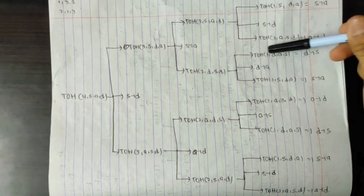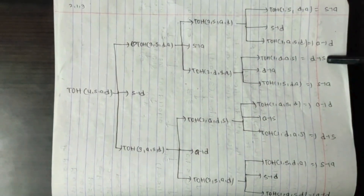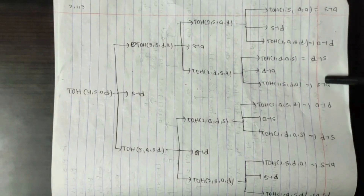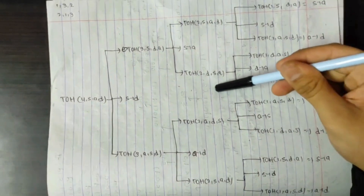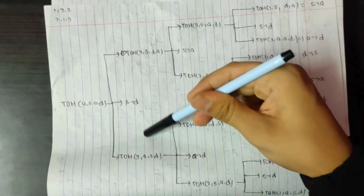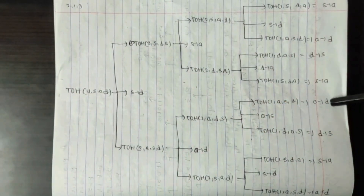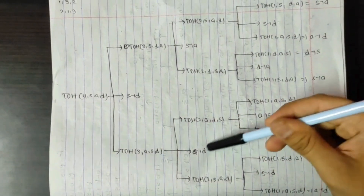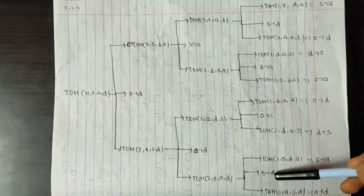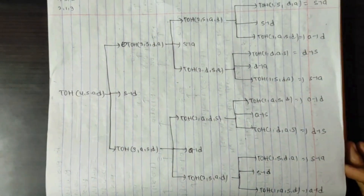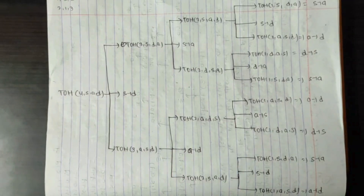For 4 disks, the steps go: S to A, S to D, A to D, traverse down S to A, D to S, D to A, S to A, traverse down S to D, A to D, A to S, D to S, A to D, S to A, S to D, A to D. You can use this technique for any number of disks. If you like the video, subscribe to the channel.